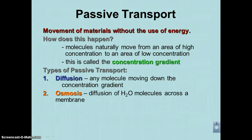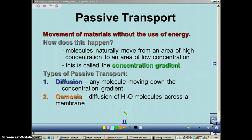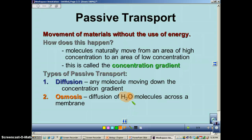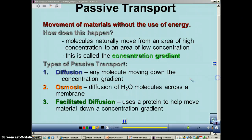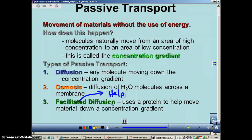The second type is called osmosis. This is simply diffusion — moving from an area of high concentration to an area of low concentration, going down the concentration gradient. But this is a special one: it's the diffusion of water only. Osmosis is one of the most important things that happens with cells — you need to get water in and out. The final type is called facilitated diffusion. Facilitate simply means to help, so this is diffusion with a little bit of help, using a special protein called a carrier protein.